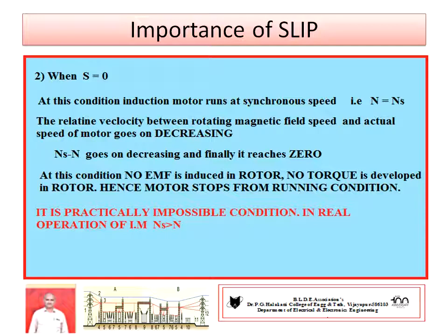The second condition: when slip s equals 0. At this condition the induction motor would run at synchronous speed, that is N equals Ns. The relative velocity between the rotating magnetic field speed and the actual rotor speed — that is Ns minus N — goes on decreasing until it finally reaches zero. When it reaches zero, the speed of the motor equals synchronous speed N equals Ns. At this condition, no EMF is induced in the rotor circuit, hence no torque is developed, and the motor stops from the running condition.